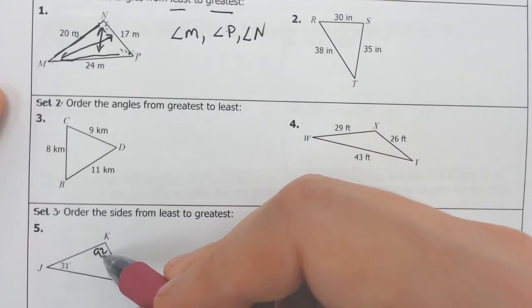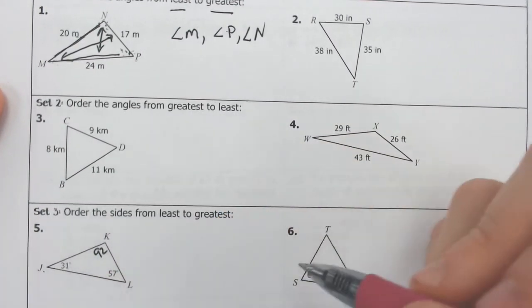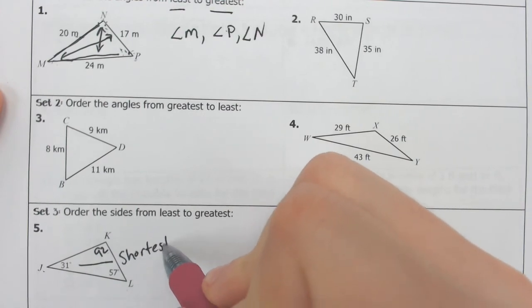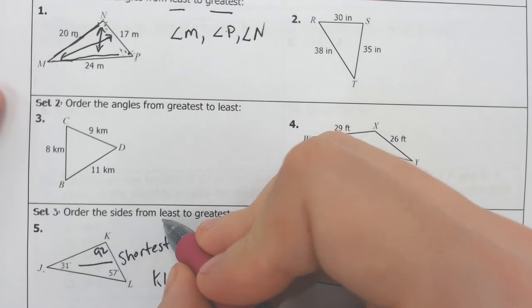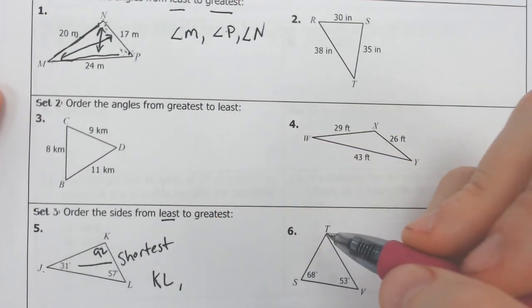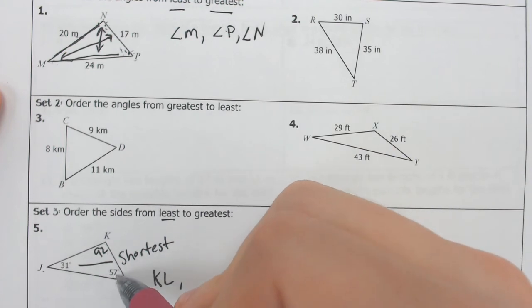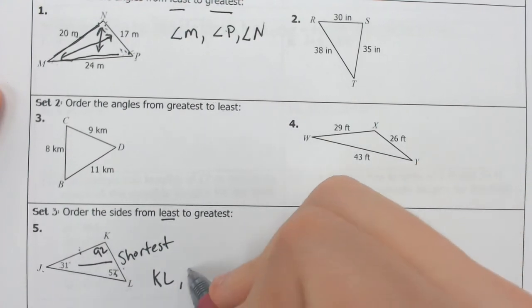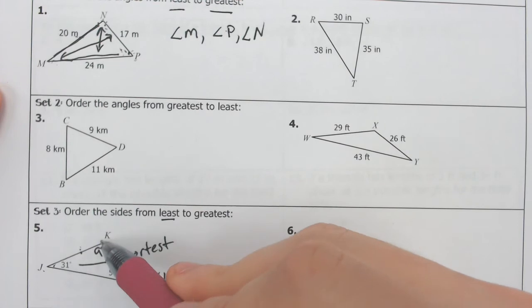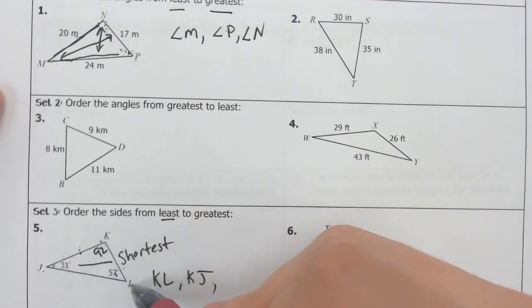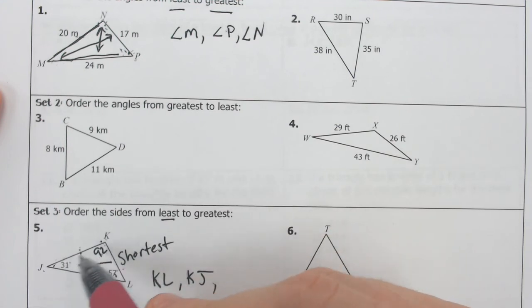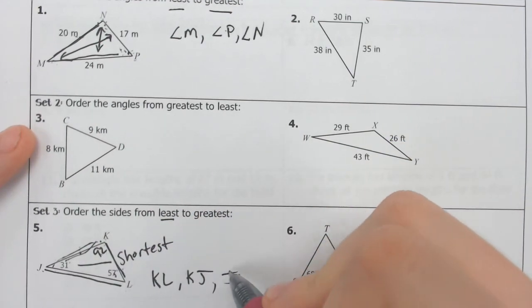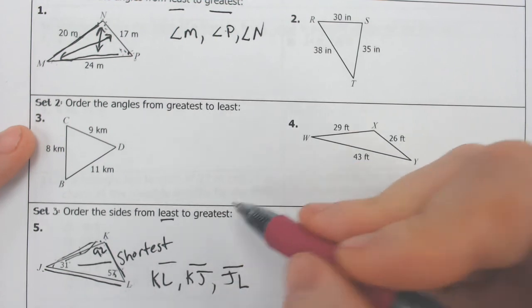Angle K is by far the biggest angle, which means JL is going to be by far the biggest side. KL is across from the smallest angle. Therefore, KL is going to be the smallest side. After that, we have 57, which is going to go directly across from KJ. So that means KJ is going to be that medium side. And 92 is the biggest angle, opening up across to JL. And that means that JL is the biggest side. We have our sides from least to greatest.